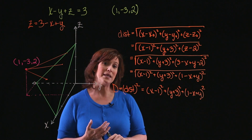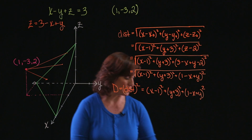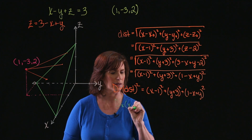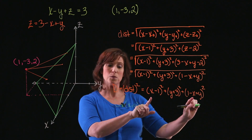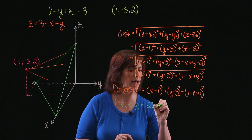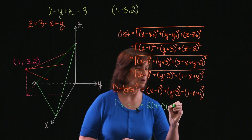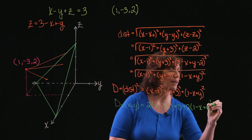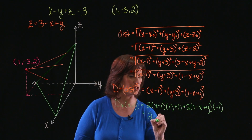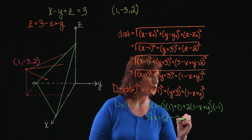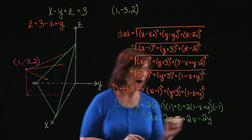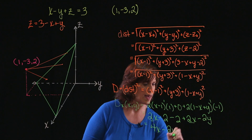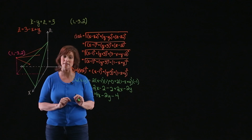I need to find critical points, which means I need to find the partial derivatives with respect to x and y. Taking the partial of D with respect to x, I treat y as a constant. The derivative is 2 times the quantity x minus 1 times 1, plus 2 times the quantity 1 minus x plus y times negative 1, which gives me 2x minus 2 minus 2 plus 2x minus 2y. Combining like terms: 4x minus 2y minus 4.